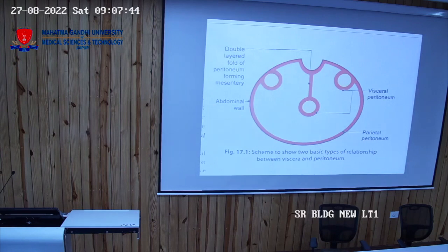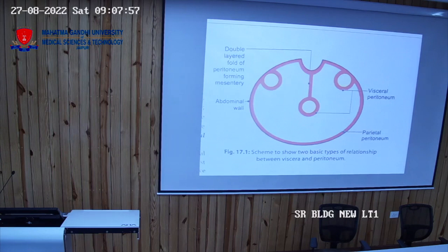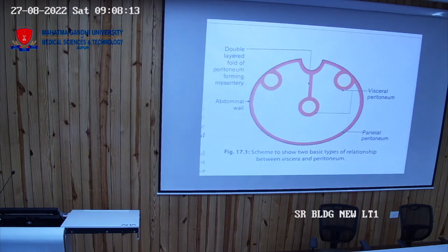As the viscera invaginate, they are surrounded again by another part of the peritoneum. Since it is a closed serous sac and the viscera are invaginated, they divide it into two layers. The outer layer of the peritoneum, which lines the interior of the abdominopelvic cavity, is called the parietal peritoneum.